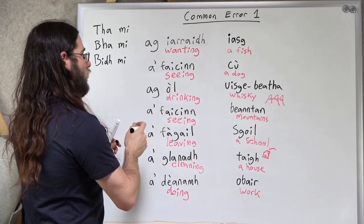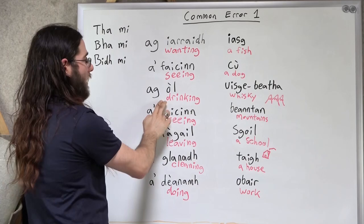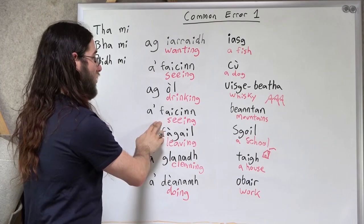Let's see. Drinking whiskey. Yeah. No Gaelic learner ever does that. Ag òl uisge-beatha. Bha mi. Let's say. I was. Right. Bha mi ag òl uisge-beatha. I was drinking whiskey. Gléidh.